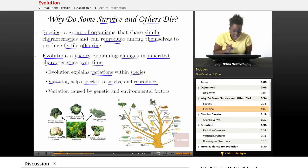So evolution explains why there are certain variations within a particular species, and variation helps the species to survive and to reproduce. Well, why is that? Because variation is caused by genetic and environmental factors, but the more variation you have within a species, the better they're able to adapt to changing environments, and the more variation, the better they're able to adapt to that.